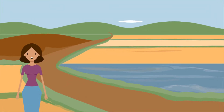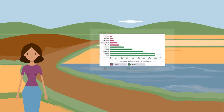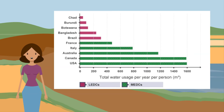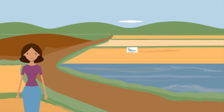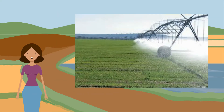Now, let's consider water use per person. The amount of water used per person in each country changes dramatically. The bar chart shows the total amount of water used per person in selected countries. Firstly, let's consider the use of water for agriculture. In more economically developed countries, irrigation is mechanized — sprinklers or timed irrigation feeds are used, and where agriculture is common, vast amounts of water can be released at the touch of a button.